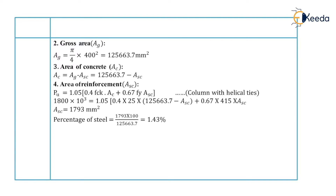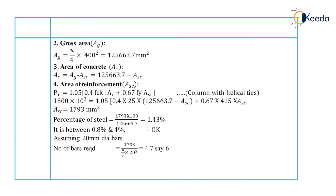Now we will find out the percentage of steel, to verify it is not less than the minimum and not more than the maximum. The percentage of steel is equal to 1793 into 100 upon gross area, which is equal to 1.43%. Our limit is between 0.8% to 4%, and it lies within this recommended limit. Now we will assume 20 mm diameter bars. Number of bars required equals area of steel reinforcement upon area of 1 bar, which is equal to 4.7. We will round up by providing 6 bars of 20 mm diameter. Therefore, area of steel reinforcement provided is 6 into pi by 4 into 20 squared, which is equal to 1884 mm square.